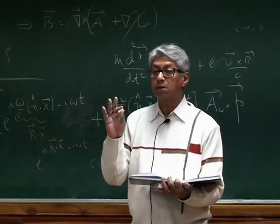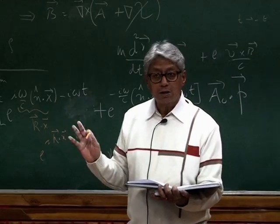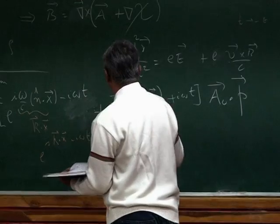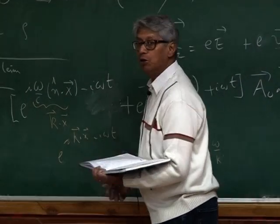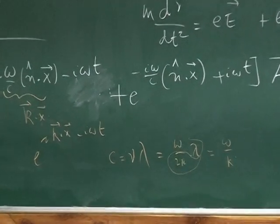Omega by 2 pi times lambda. And lambda by, well, 2 pi by lambda is actually K. So omega is also Kc for light. Because light propagates, well, the electromagnetic field propagates the speed of light. This is Einstein's special theory of relativity. So this is now your interaction to linear order in the electromagnetic field where you have neglected this term.